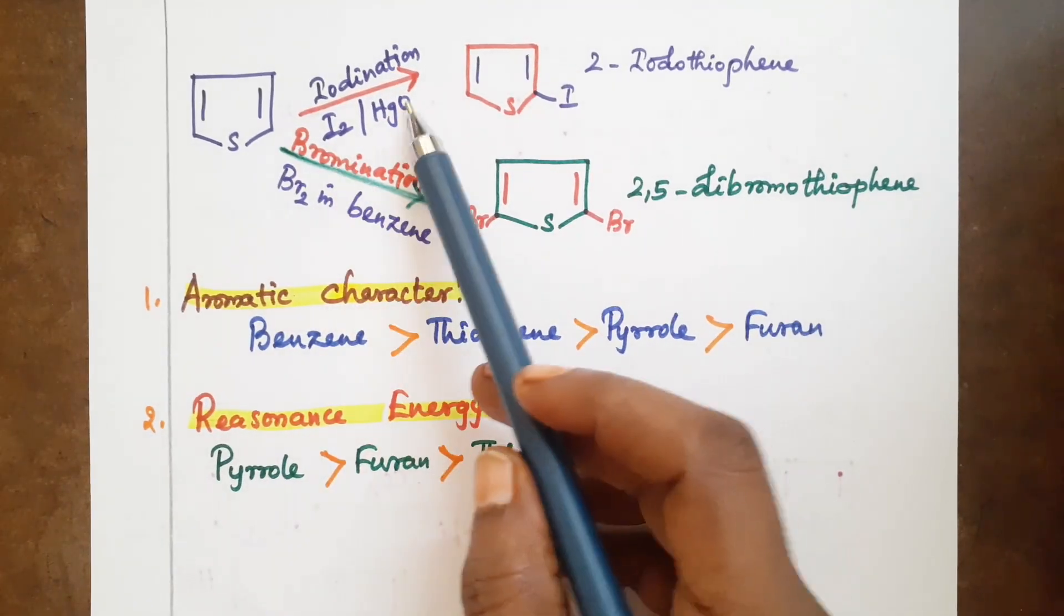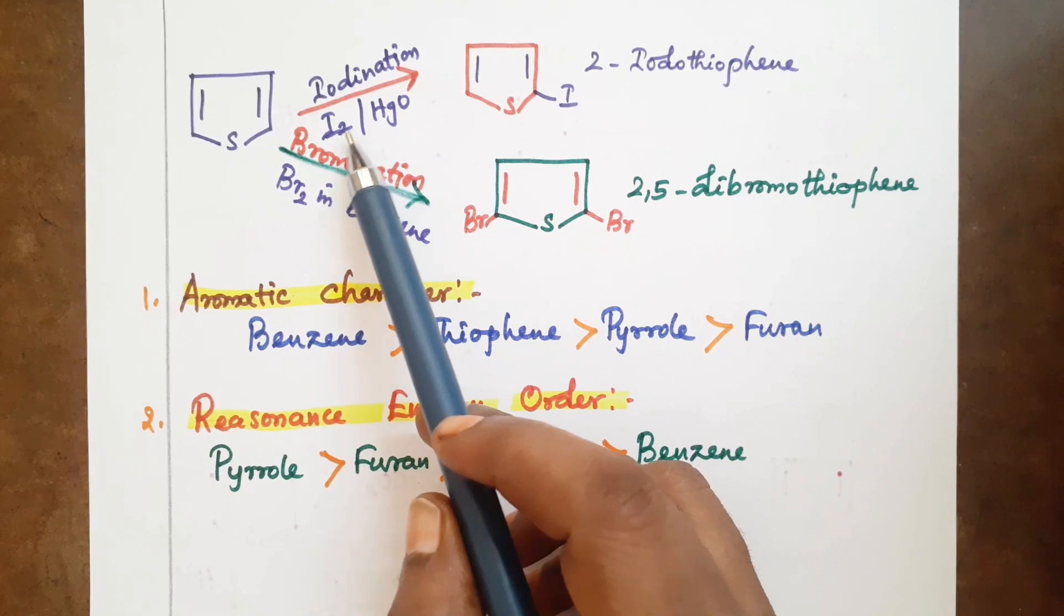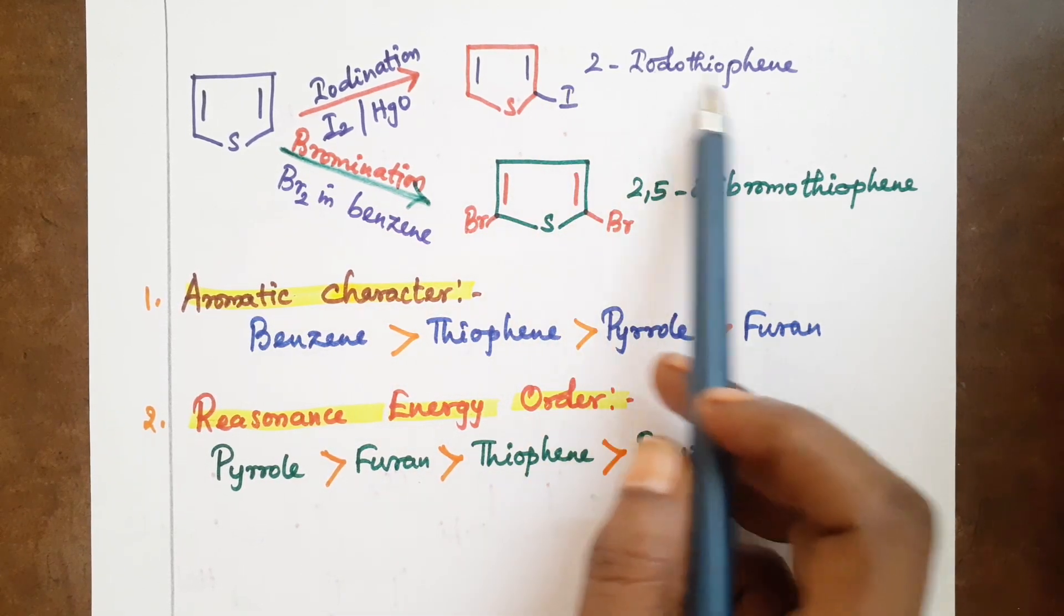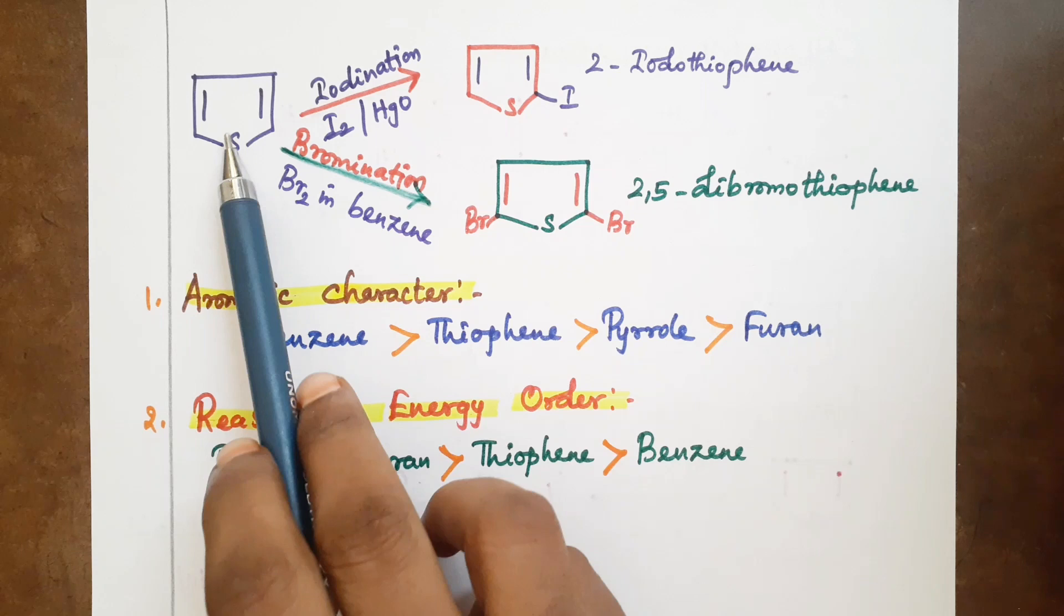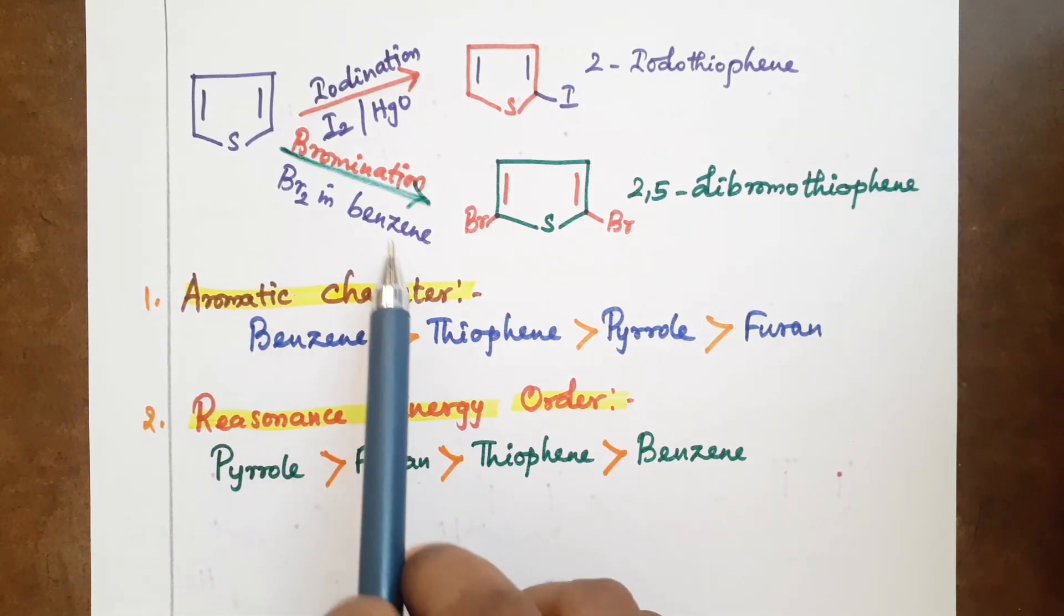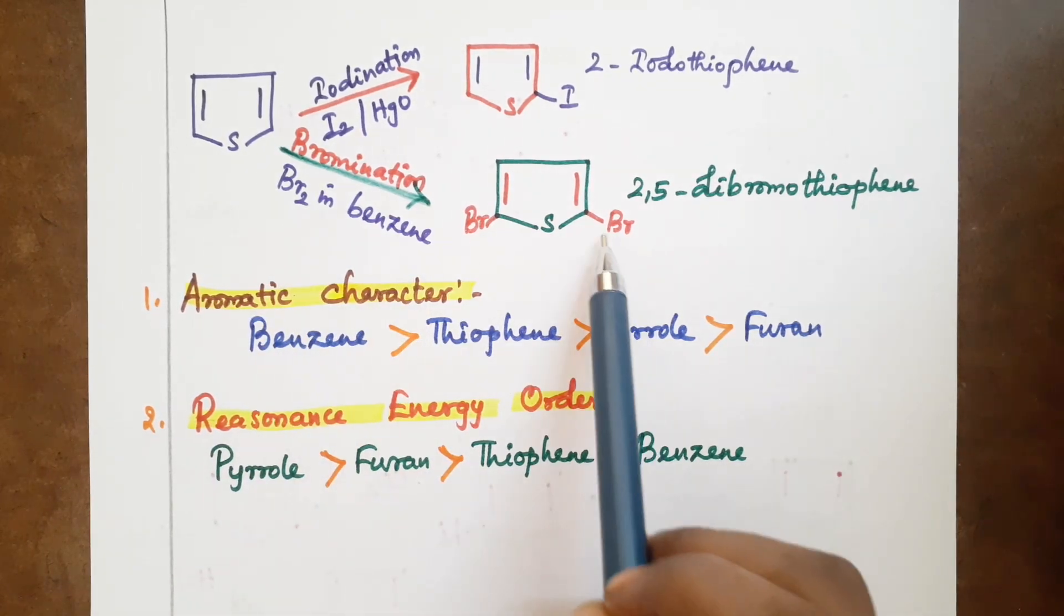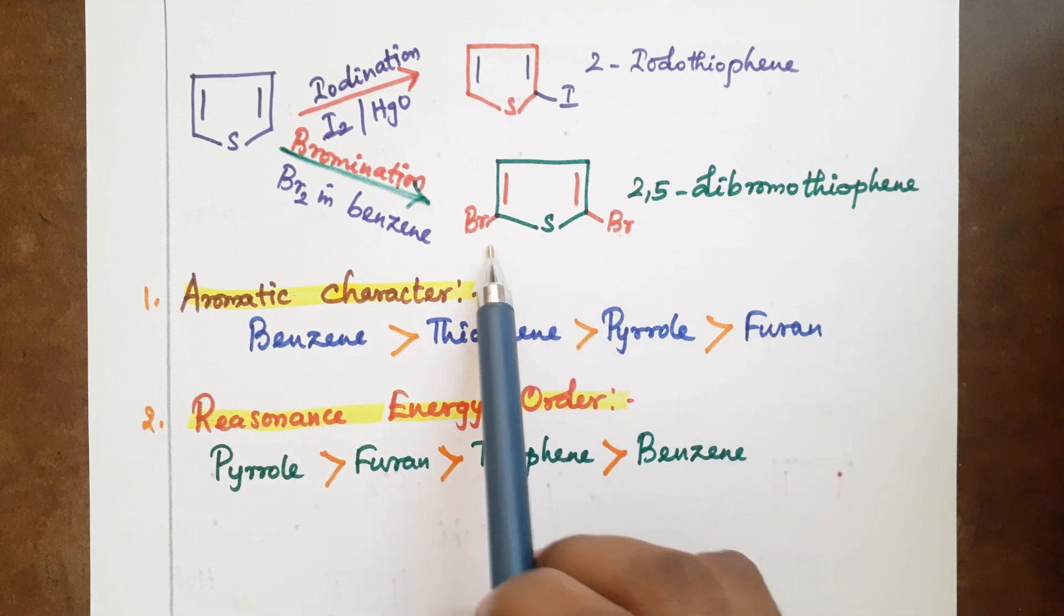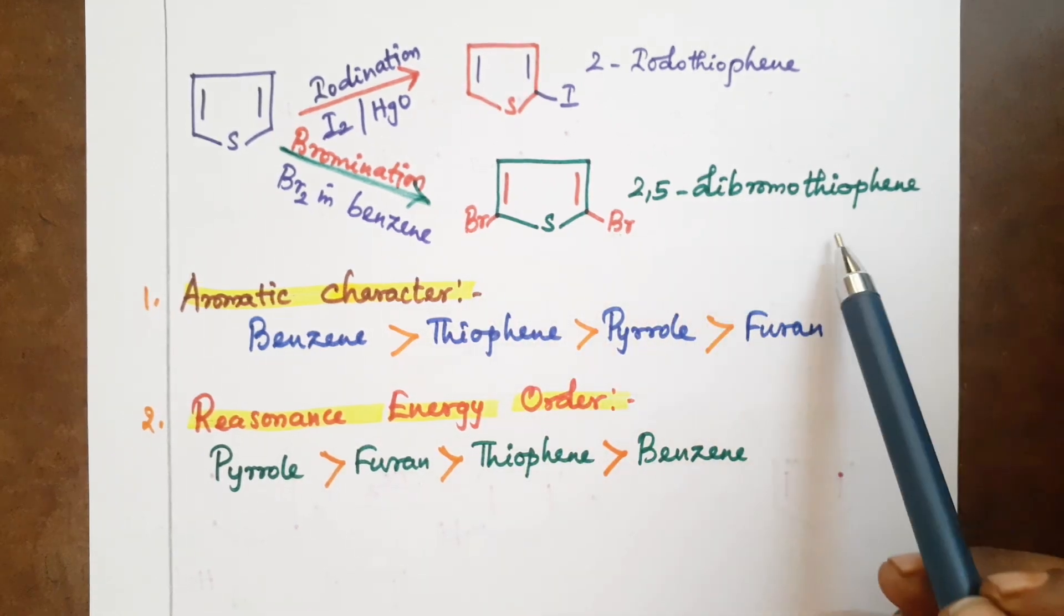Thiophene undergoes iodination in presence of mercury oxide to form 2-iodothiophene. Thiophene undergoes bromination in presence of benzene with bromine to give 2,5-dibromothiophene.